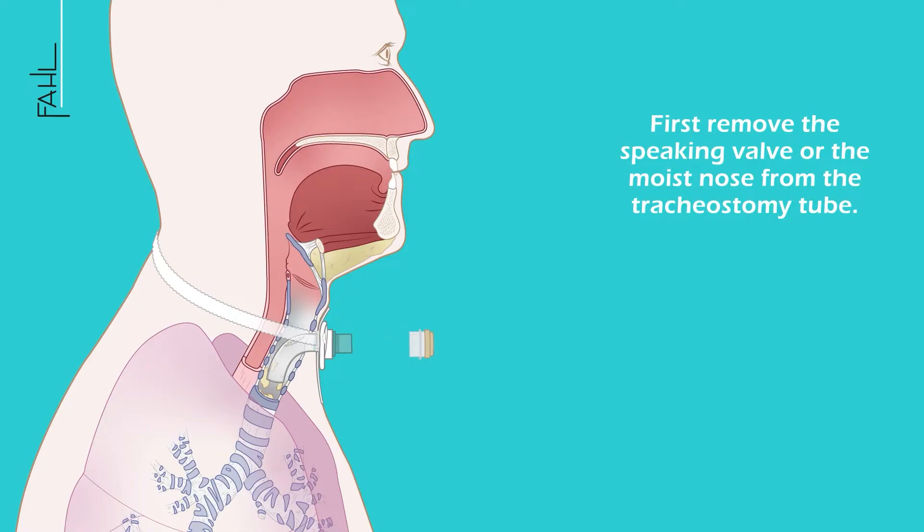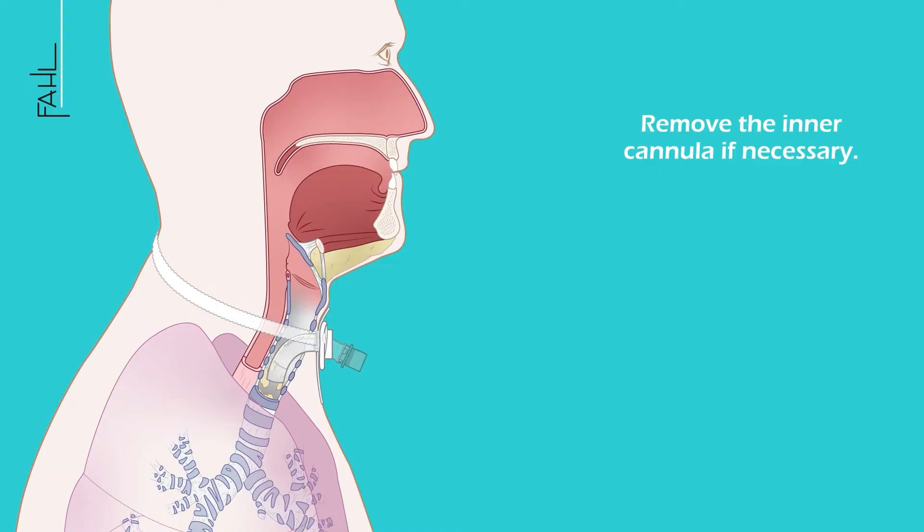First remove the speaking valve or the moist nose from the tracheostomy tube. Remove the inner cannula if necessary.